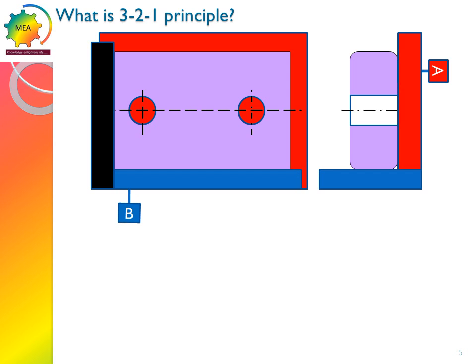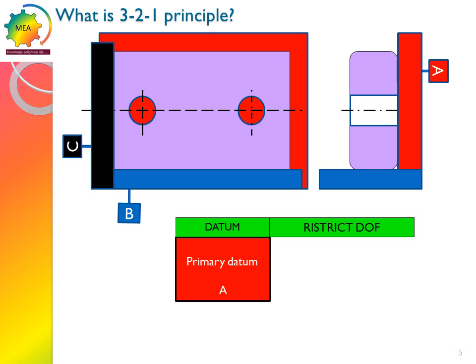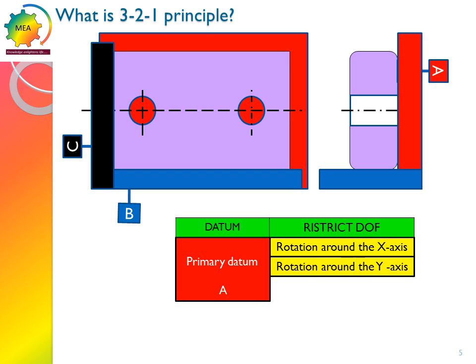Let us see when cover plate is placed on these datum simulators. We know that bottom surface is datum A, and surface along the length is datum B, and surface along the width is datum C. Let us see how these datums are going to restrict degrees of freedom. The primary datum A will restrict rotation around x-axis, it will restrict rotation around y-axis.